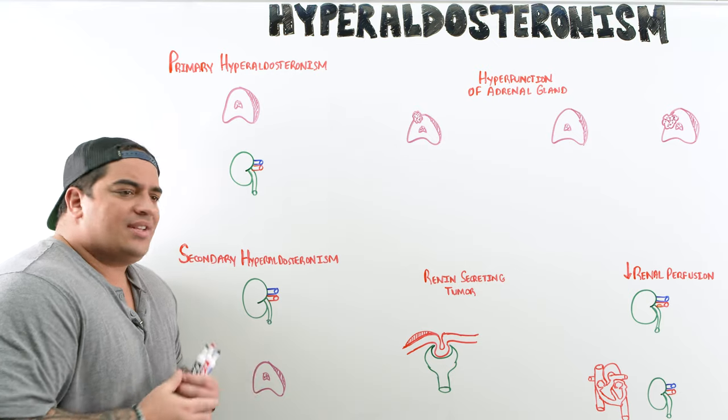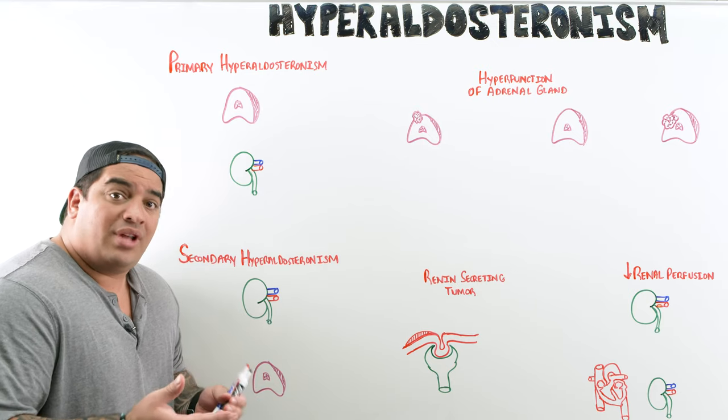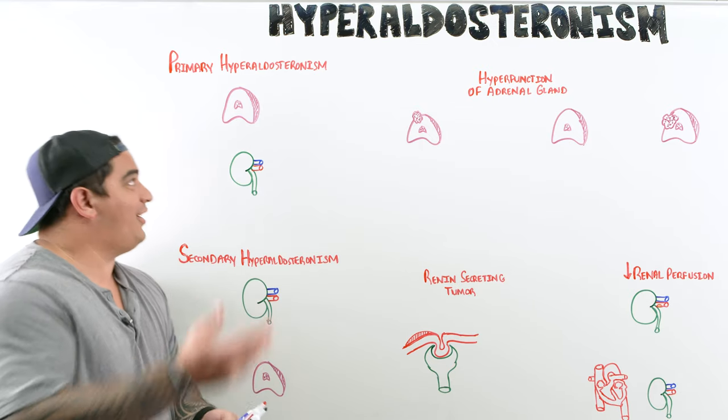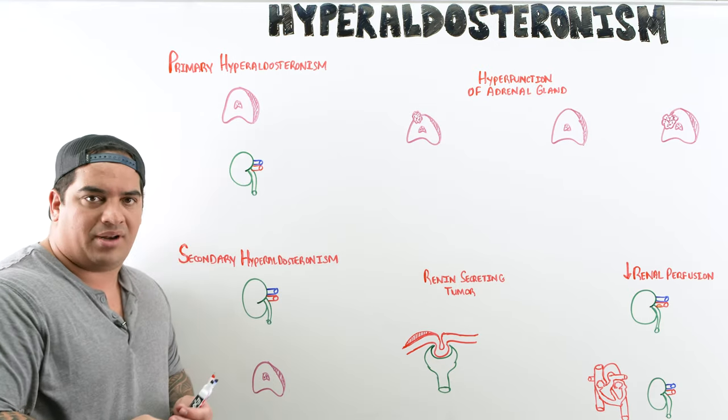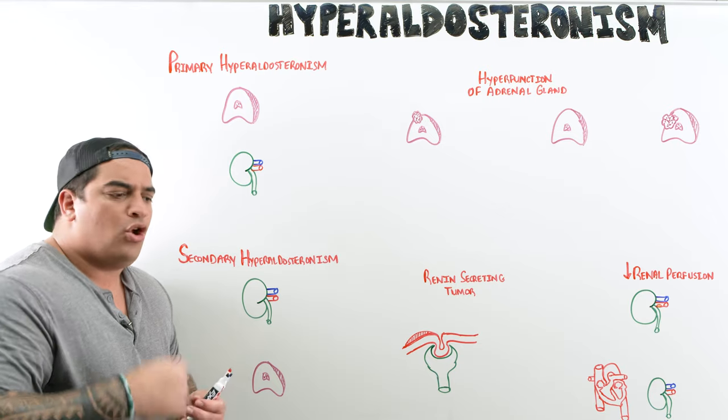So in this scenario, there are two types: primary hyperaldosteronism and secondary hyperaldosteronism.